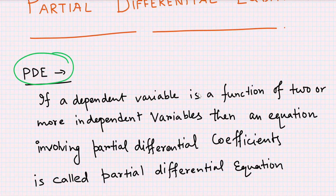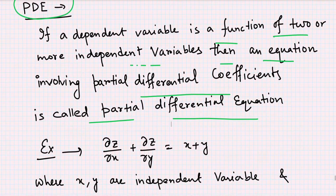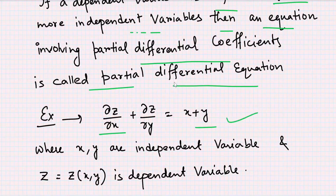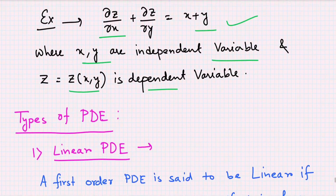First, let's recall the definition of a PDE. If a dependent variable is a function of two or more independent variables, then the equation involving partial differential coefficients is called a partial differential equation. For example: ∂z/∂x + ∂z/∂y = x + y, where x and y are independent variables and z = z(x, y) is the dependent variable.